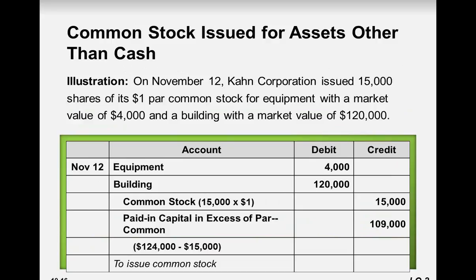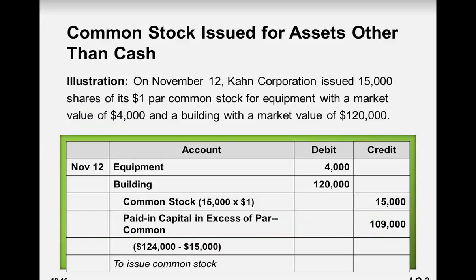We issued 15,000 shares of $1 par stock, so $15,000 becomes our common stock amount, and any difference is our additional paid-in capital or paid-in capital in excess of par. In the last example we used stock to purchase an asset; in this case we're using stock to pay a legal expense. The bill was $25,000, and they agreed to take 2,500 shares of $1 par stock. So 2,500 shares at $1 is $2,500 for common stock, and the difference is paid-in capital. We have to make sure debits and credits equal in each transaction.